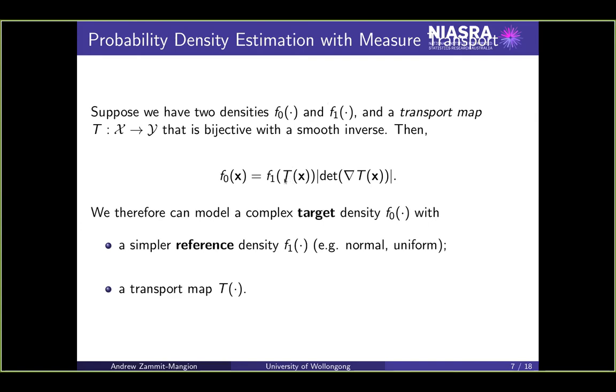You can think of it as a transformation map, such that when I transform X, then F1 of T of X, multiplied by the determinant of the Jacobian, gives me the target density. I'm calling this a transport map because I'll be working with increasing triangular maps. There's a way in which you can come up with increasing triangular maps via transport theory. If there's a cost function you can define and an optimal transport plan, you end up with a Knothe-Rosenblatt rearrangement, which is an increasing triangular map.